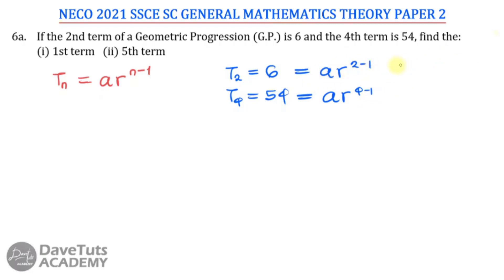That means AR is equal to 6, because 2 minus 1 is just 1, we don't need to write that. Then A R raised to power 3 is equal to 54. So these are two equations that we can have here, equation 1 and equation 2.